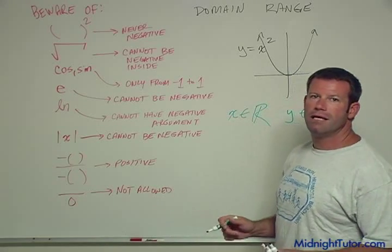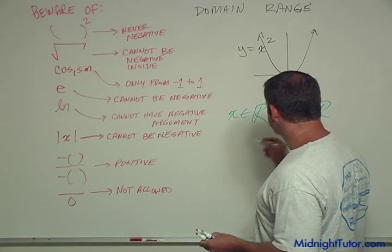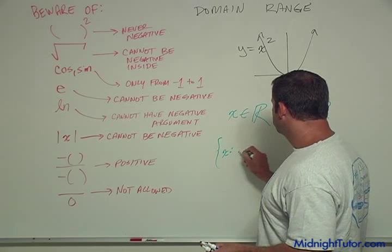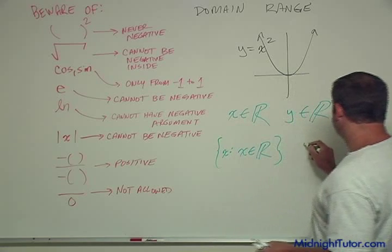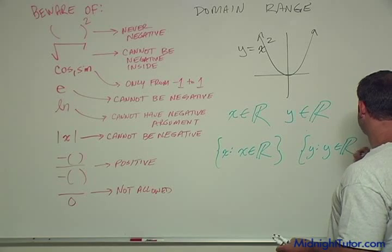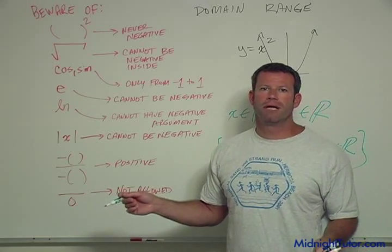Now, how would you write it on a test, or how would you see it written on an AP question or something like that? They might have something like this. They might use set notation and say X such that X is real, and they might say Y such that Y is real. So, that's a function where there are no limitations on domain and range.